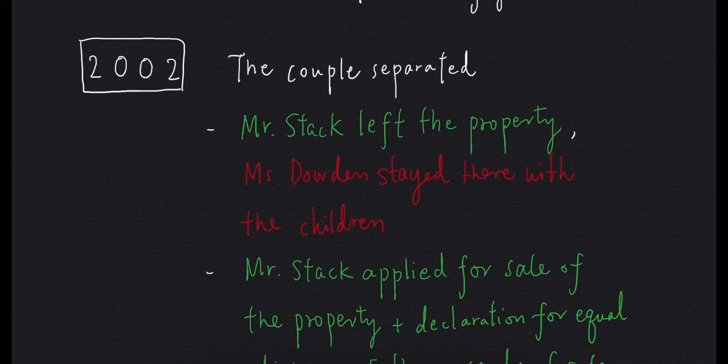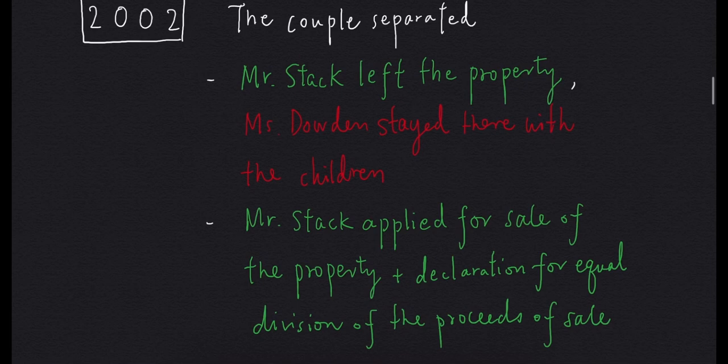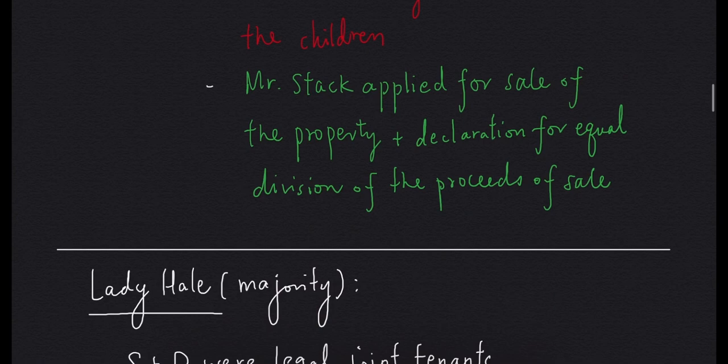In 2002, the couple separated. Mr. Stagg left the property. Ms. Dalton and the children stayed at the house. Later on, Mr. Stagg applied for a sale of the property and a declaration for equal division of the proceeds of sale. So the case went all the way up to the UK House of Lords.